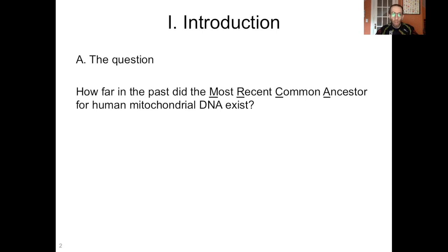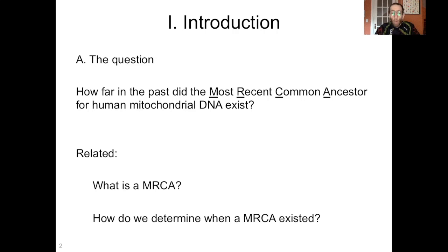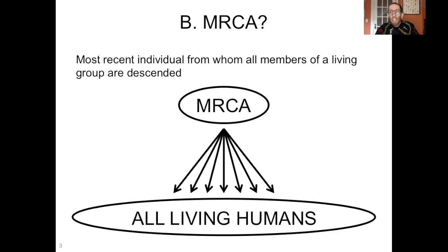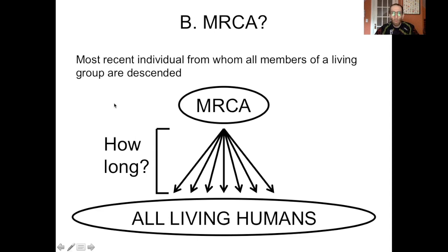For this reason, it's really easy to track mitochondrial DNA back through generations. We can look at the sequences of everyone's mitochondrial DNA and work backwards in time to see where they converge. That's called the most recent common ancestor. We have two questions to cover: what is a most recent common ancestor, and how do we determine when a most recent common ancestor existed? We're going to use the abbreviation MRCA for most recent common ancestor. The MRCA refers to the most recent individual from whom all members of a living group are descended.